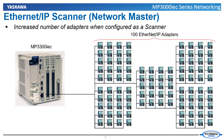When the MP3000 IEC series motion controllers are set up as scanner devices, they can transfer information with up to 100 Ethernet IP adapters at one time. This is useful when the motion controller is being used as a data storage or transmission hub.